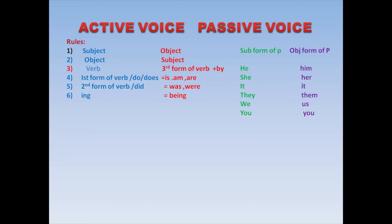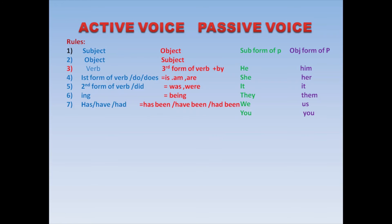Rule number seven: subject becomes object, object becomes subject, third form of verb plus 'by', first form uses 'is/am/are', second form uses 'was/were', 'ing' uses 'being' — these are all clear. Now rule seven: don't worry about present perfect, past perfect, or future perfect labels. Just follow this rule — if the sentence has 'has', 'have', or 'had', change them to 'has been', 'have been', or 'had been'. Just add 'been' — that's all.